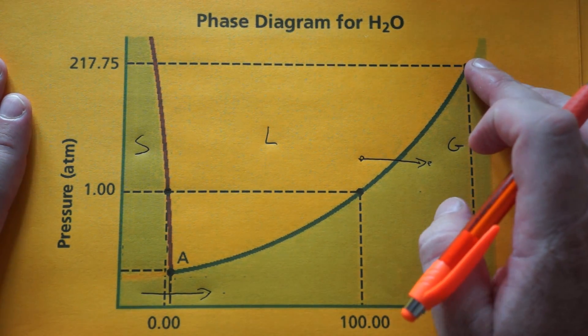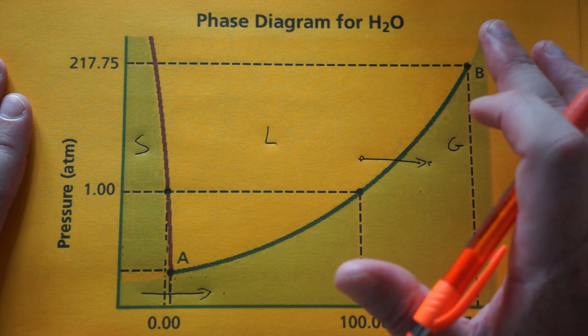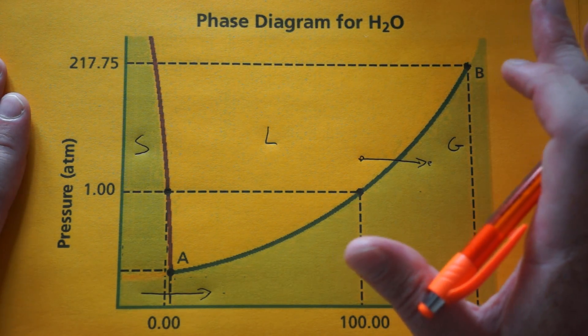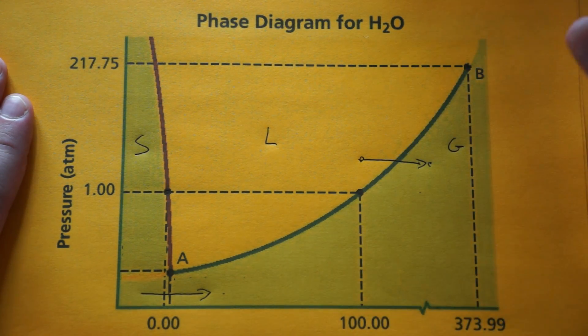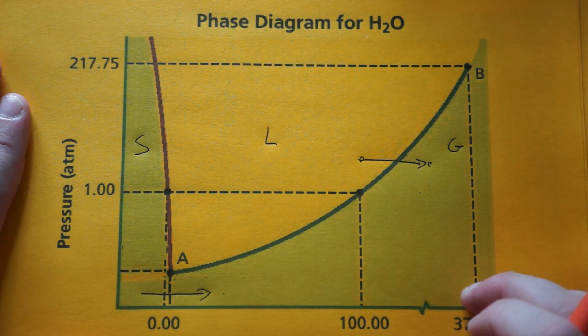Above this point, no matter how much pressure, you can't liquefy it. It's called a supercritical fluid. Anything above this in the top right is supercritical.